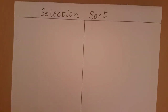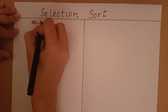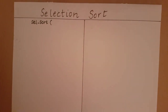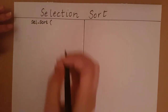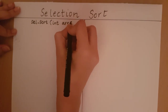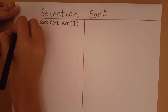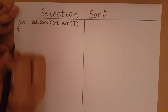In this video, we will learn how to write a program for the algorithm selection sort. Let's start by defining the function. This function is going to take an array as its input, sort the array, and return the sorted array. I am taking an integer array as my example.